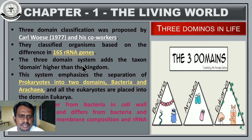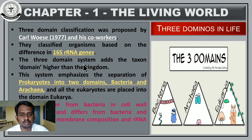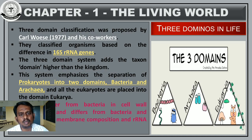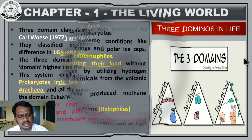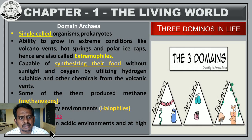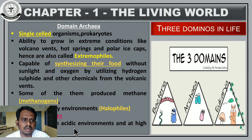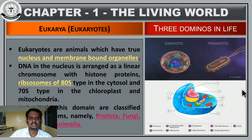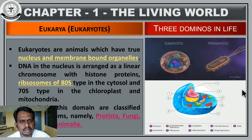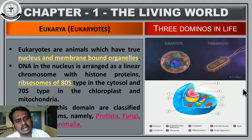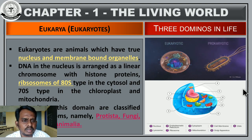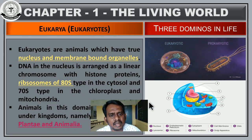Regarding archaea: they are called extremophiles because they can grow in extreme conditions — either high or low temperature. Some archaea are methanogens, some are thermoacidophiles meaning they can survive in acidic conditions as well as high temperature, and some archaea are halophiles. Eukaryotic means organisms with a true nucleus, and includes Protista, Fungi, Plantae, and Animalia.